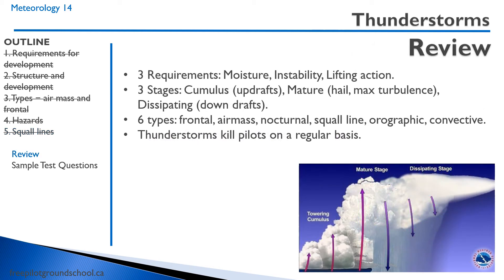To summarize: thunderstorms have three requirements — moisture, instability, and lifting action. There are three stages: the cumulus stage characterized by updrafts, the mature stage characterized by hail and maximum turbulence, and the dissipating stage characterized by downdrafts. There are six types of thunderstorms: frontal, air mass, nocturnal, squall line, orographic, and convective — though convective, orographic, and nocturnal are all considered subtypes of air mass thunderstorms. Thunderstorms unfortunately kill pilots on a regular basis.